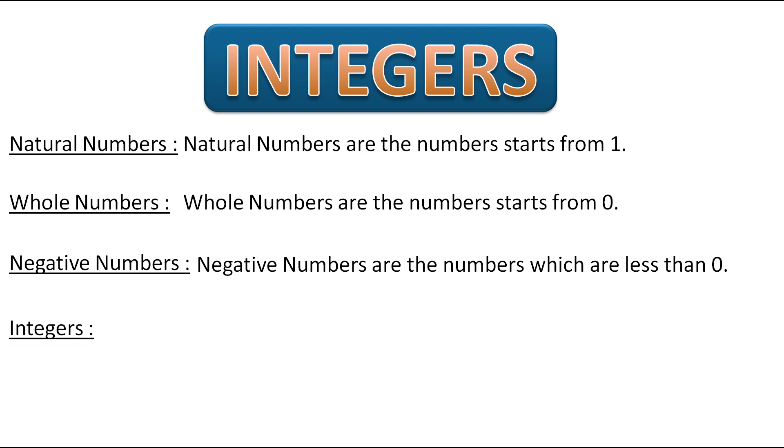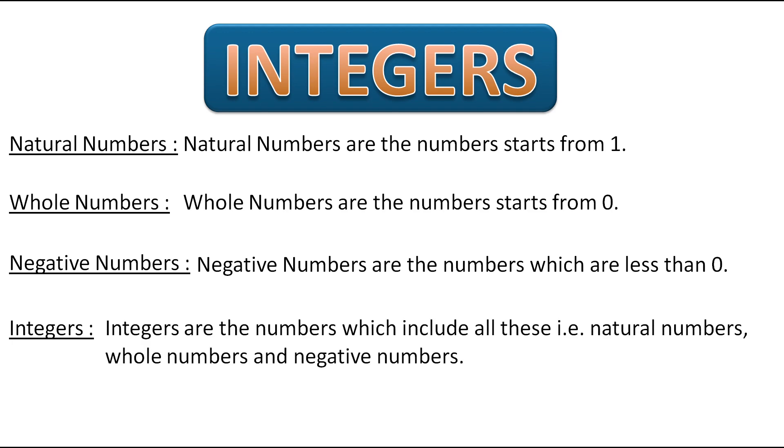Next comes integers. So integers are the numbers which include all these things: natural numbers, whole numbers, and negative numbers. All these groups combined are called integers. So you will better understand it by seeing.